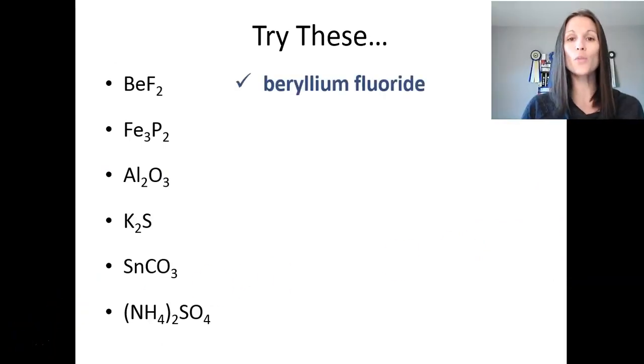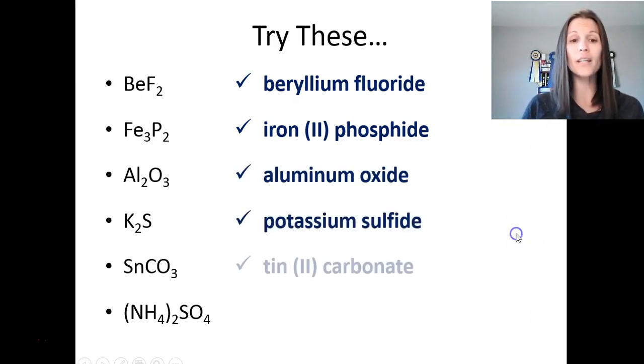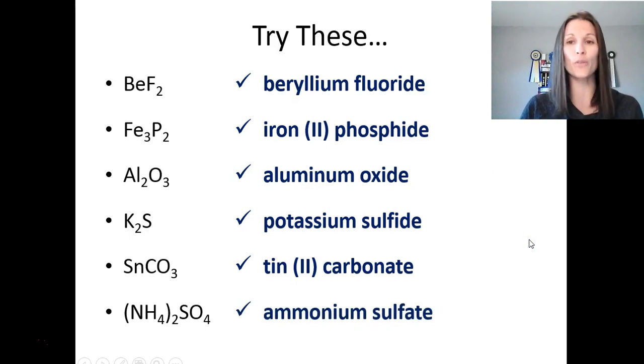Let's see how you did. First one, you should have beryllium fluoride. Then, iron two phosphide, because iron is a multivalent atom. Make sure that you check your periodic table, or that need to know list, to know which ones are multivalent. You should have aluminum oxide, potassium sulfide, tin two carbonate, again, a multivalent ion, so you have to make sure you write the roman numerals, and ammonium sulfate.